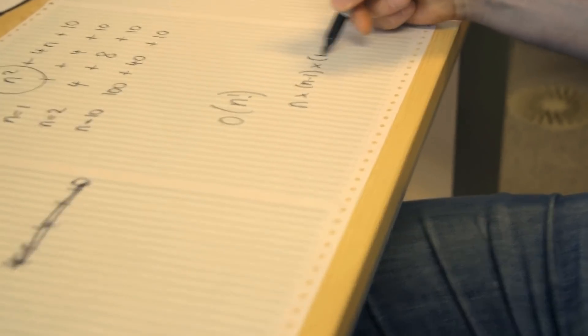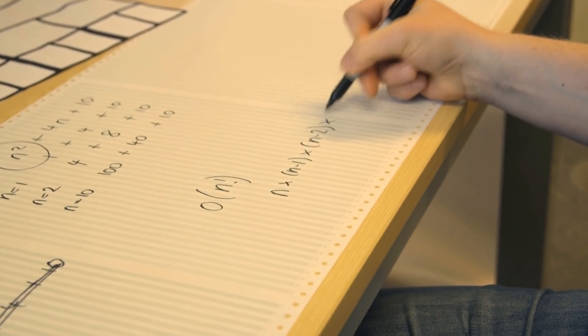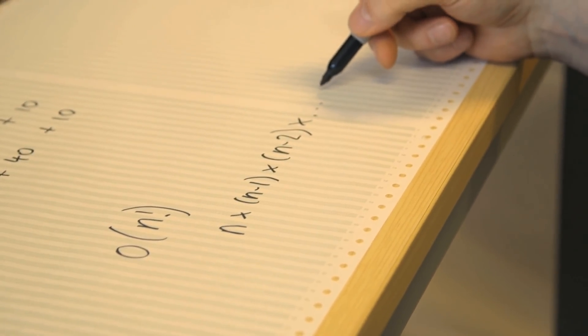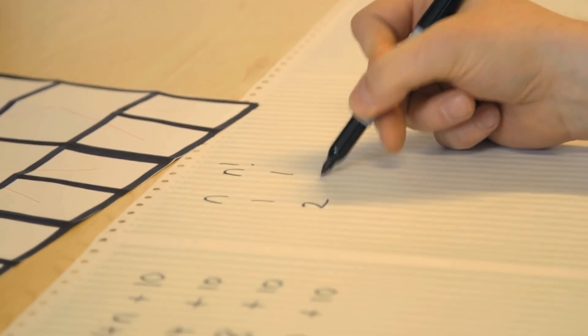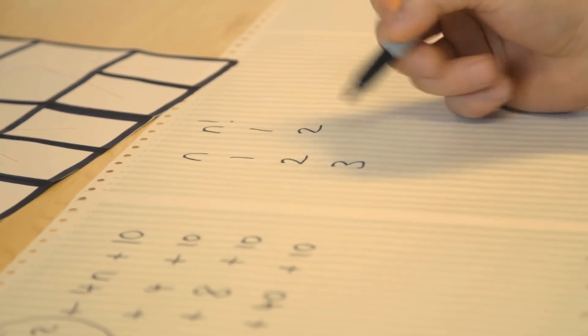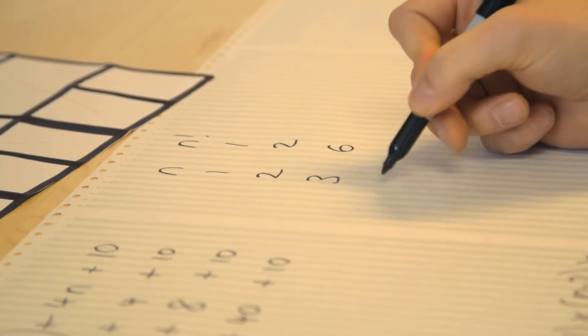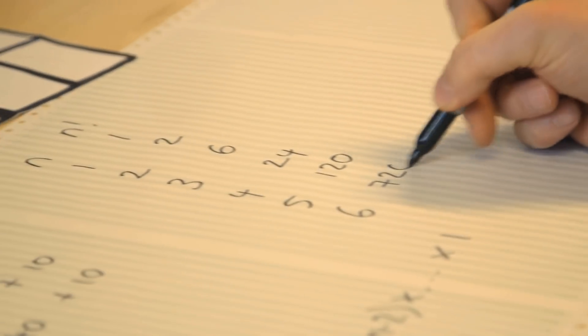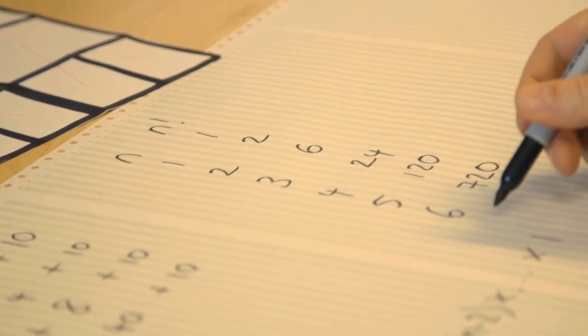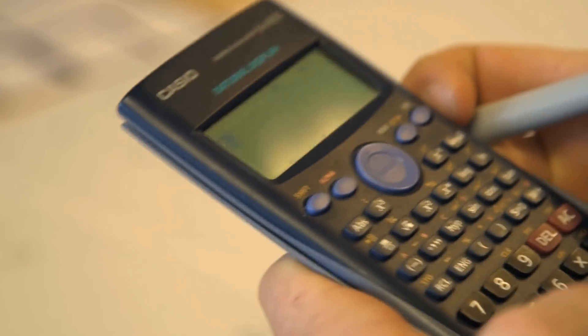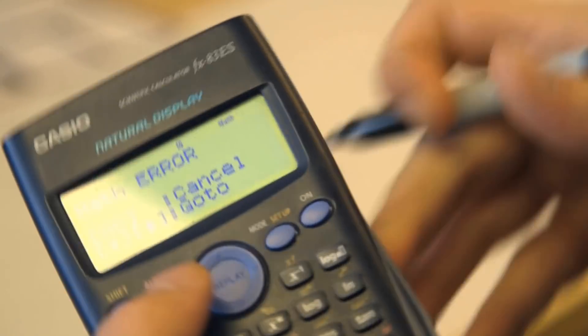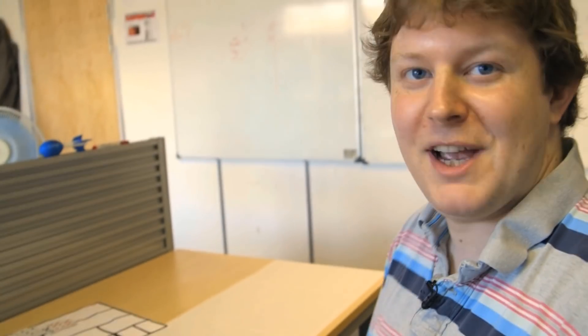There are some algorithms that scale as O(N factorial) — that's N times N−1 times N−2 all the way down to 1. For N=1: factorial is 1. N=2: 2. N=3: 6. N=4: 24. N=6: 720. By the time you get to 70 factorial, you've gone over 10 to the power of 100 and my calculator can't handle it. I can show you a sorting algorithm whose average case is N factorial.